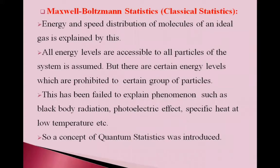In the previous lecture, we discussed Maxwell-Boltzmann statistics, that is classical statistics. Maxwell-Boltzmann statistics explained the energy and speed distribution of molecules of an ideal gas. It is assumed that all energy levels are accessible to all particles of the system. But there are certain energy levels which are prohibited to certain groups of particles.